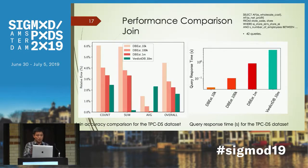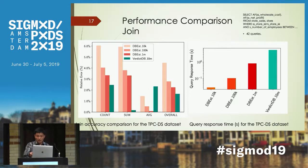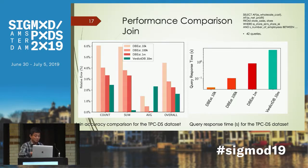For joins, the sample size for DBS varies between 10k to 1 million, while VerdictDB uses 10 million — its recommended sample size. The accuracy falls between 2% to 4%. The query response time for VerdictDB is 5 or 6 seconds, but for DBS using a 10k sample, the query response time is only 0.1 seconds.